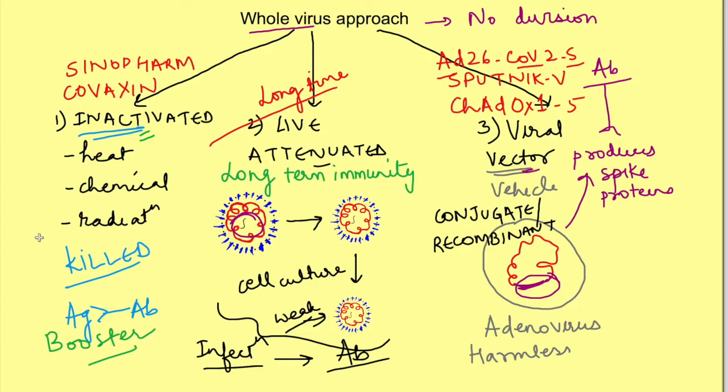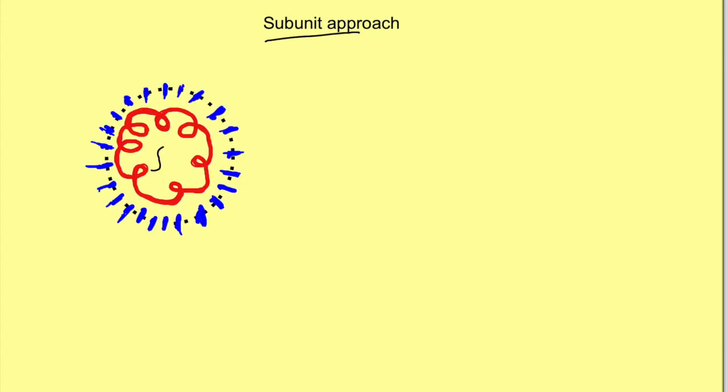Okay let's go to second broad category of vaccine that is those developed by subunit approach. In this type of vaccine we use only very specific parts that is subunits of the virus which in this case will obviously be spike proteins. One example of this type of vaccine is Novavax COVID-19 vaccine. Again because these vaccines do not contain any pathogen they are very safe but they also do not produce long lasting immunity. So for them also multiple booster doses are required.